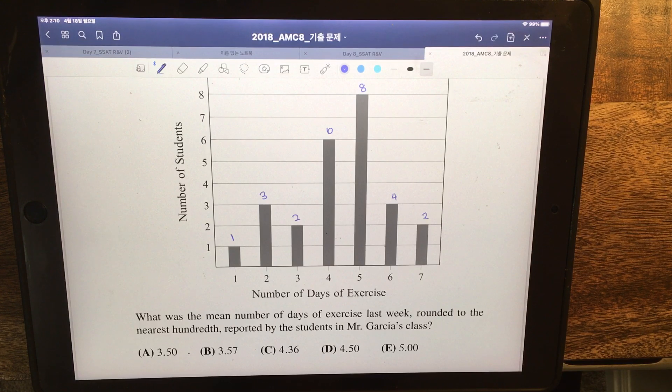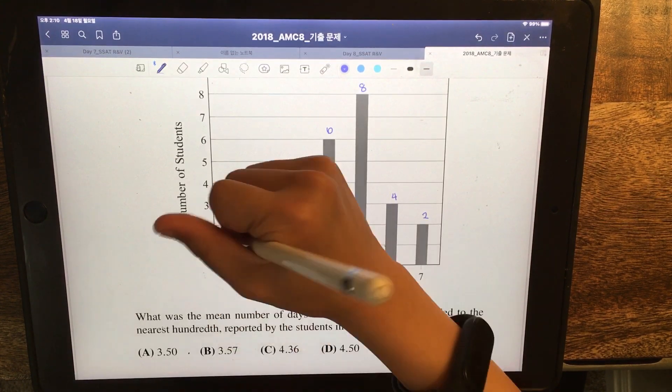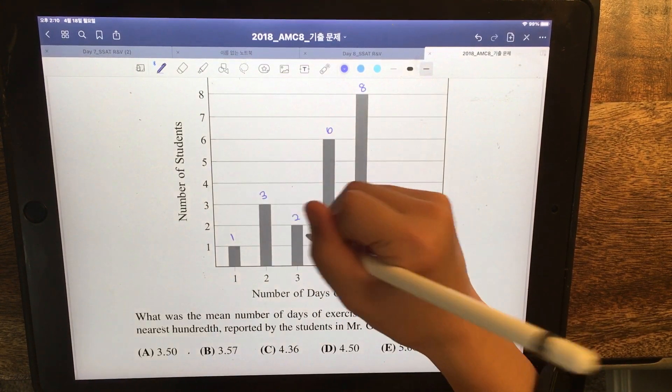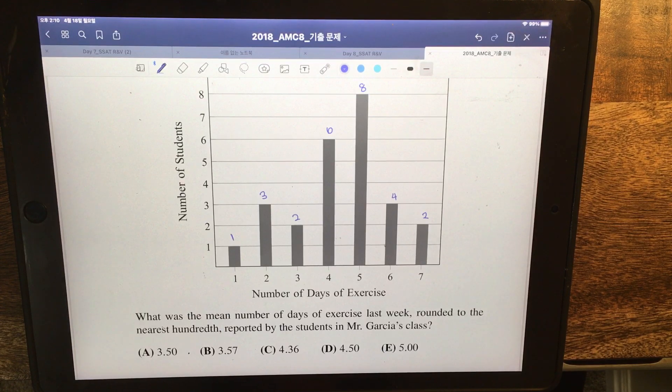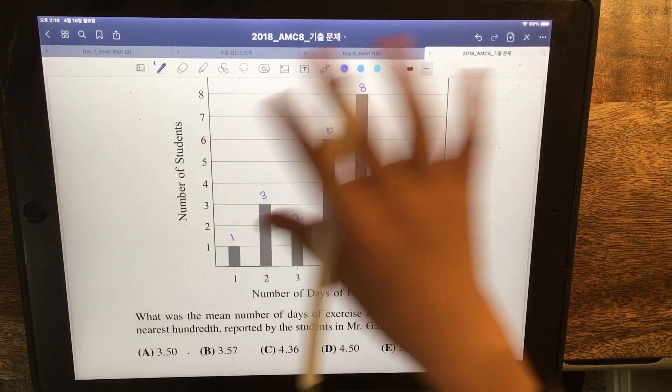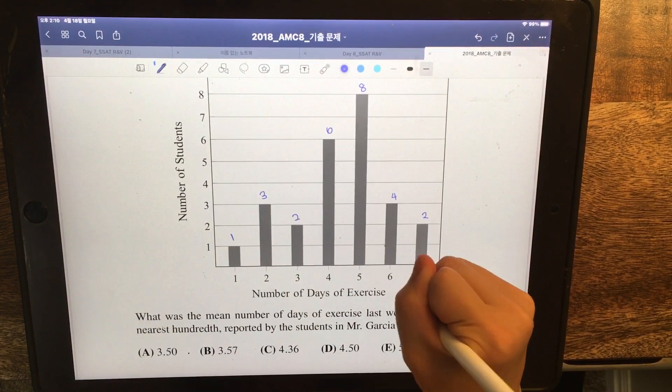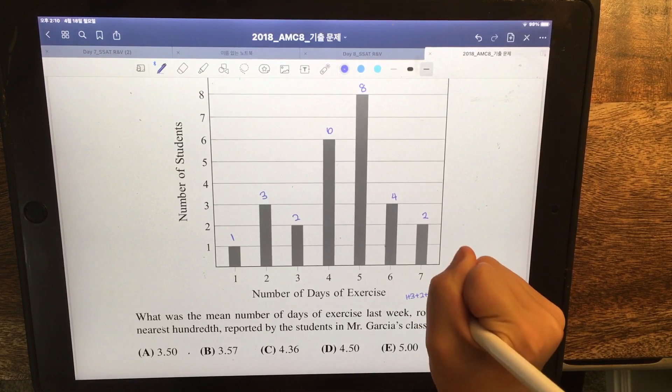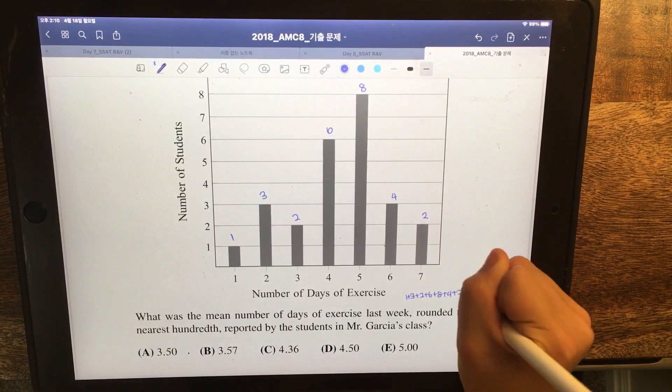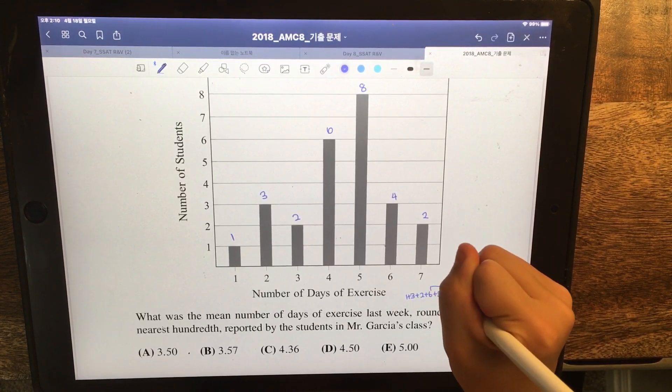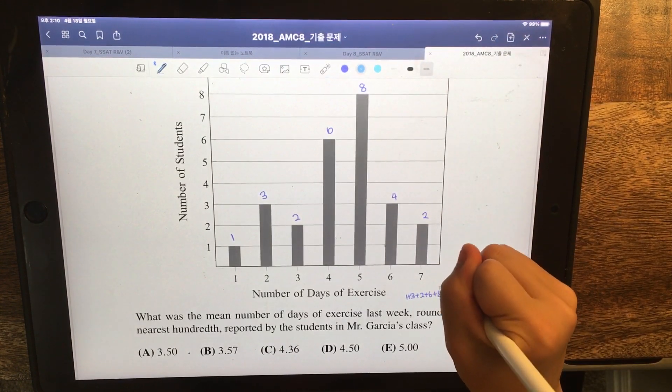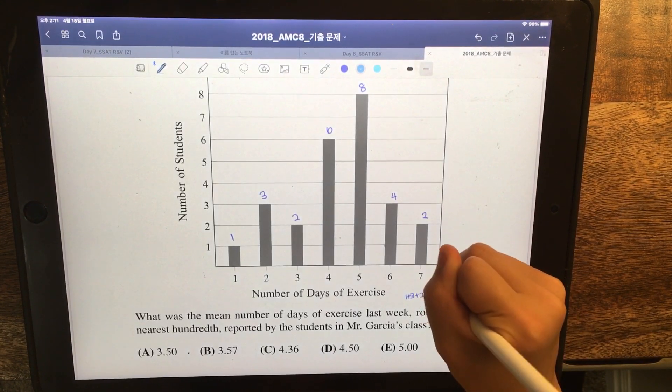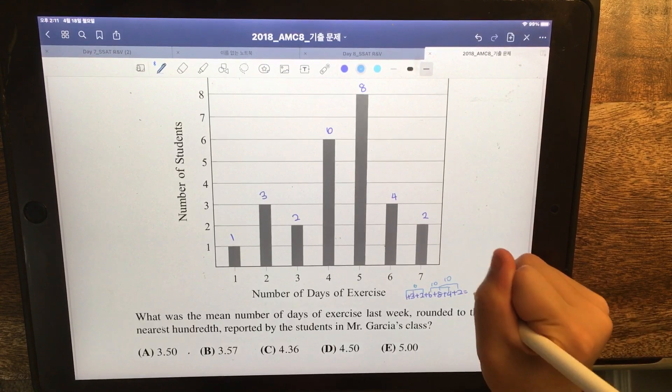What we want to see is each of the students got 1 day, 3 day, 2 days, 6 days, 8 days, 4 days, 2 days in total. So, to get the mean number, we first have to add all these days. Now, add it all up. Then, we get 26.